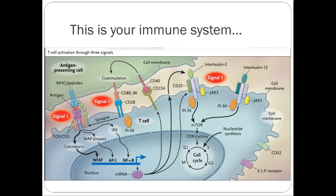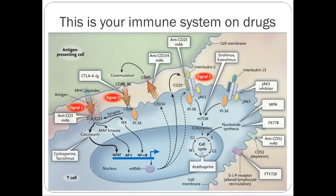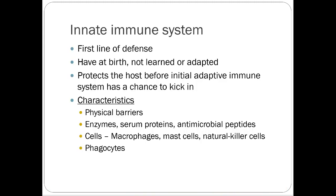Today we'll cover the different mechanisms of how we can manipulate the immune system pharmacologically and how that can help in certain conditions and disease states. We'll use solid organ transplant as a clinical example for immunosuppressive medications, though many of these drugs are also used for autoimmune disorders like Crohn's disease and psoriasis.